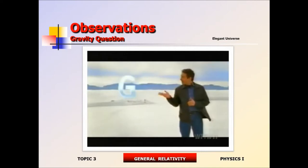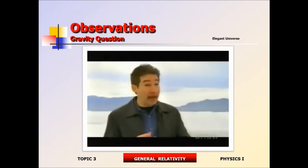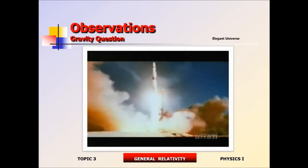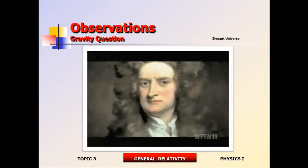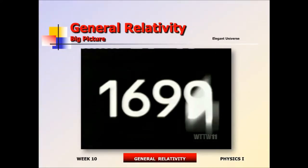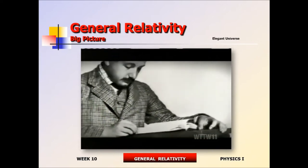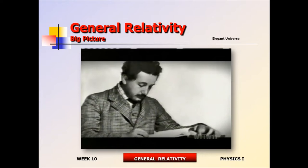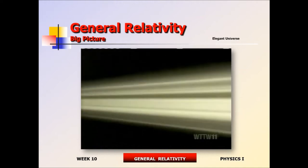Gravity was the first force to be understood scientifically, and although Newton discovered his law over 300 years ago, his equations are still used today — scientists used nothing more than Newton's equations to plot the course of a rocket that landed men on the moon. Yet Newton was harboring an embarrassing secret: he had no idea how gravity actually works. In the early 1900s, an unknown clerk in the Swiss patent office would change all that.